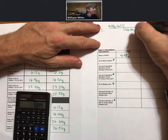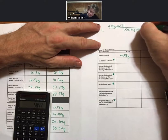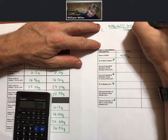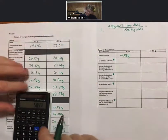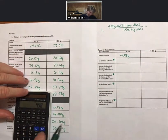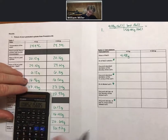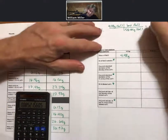So molar mass is 58.44. To find moles, 4.98 divided by 58.44, 0.0852 moles.